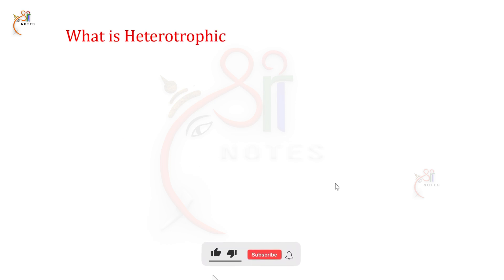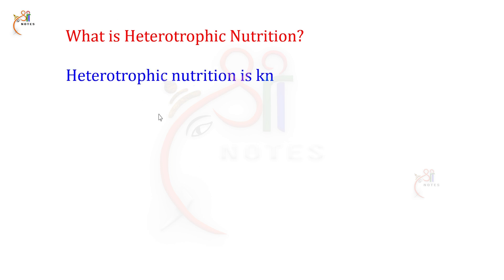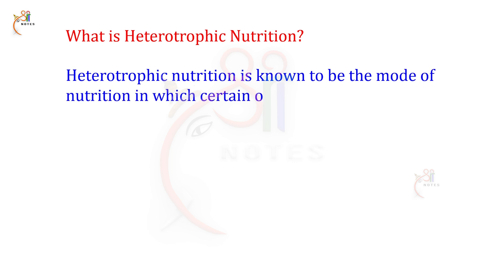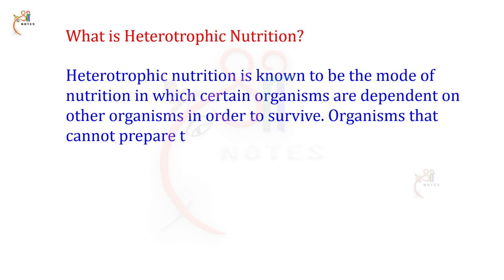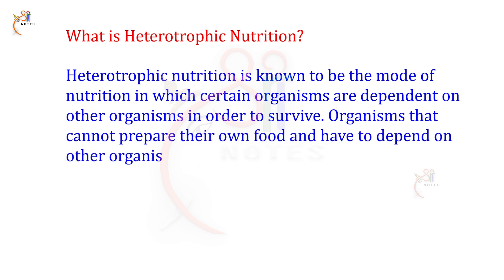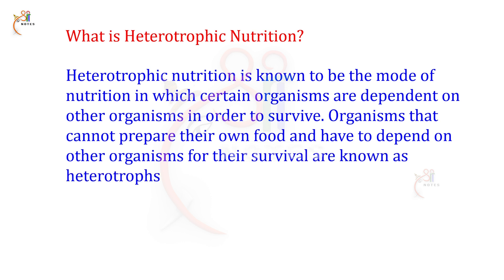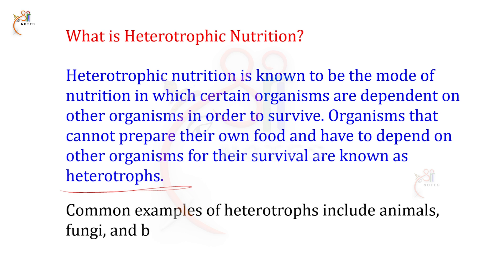Next, what is heterotrophic nutrition? This is completely opposite to autotrophic nutrition. Heterotrophic nutrition is the mode of nutrition in which certain organisms are dependent on other organisms in order to survive. Organisms that cannot prepare their own food and have to depend on other organisms for their survival are known as heterotrophs. Common examples of heterotrophs include animals, fungi, and bacteria.